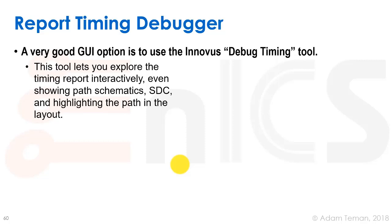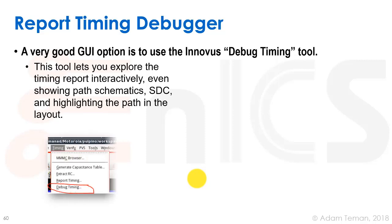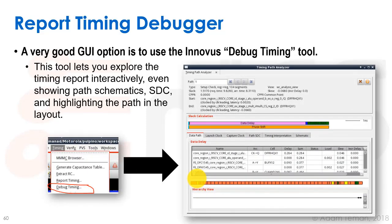There's a very useful UI option in Innovus called the Debug Timing tool, now available in Genus as well with the Stylus Common UI. It lets you explore the timing report interactively, showing path schematics, SDC, and highlighting the path in the layout. To open it, go to Timing > Debug Timing, which opens the Timing Path Analyzer. You can examine paths in an interactive graphical view, highlight the full path in the layout, and display a schematic of the path — it can be very, very useful.